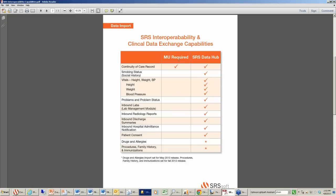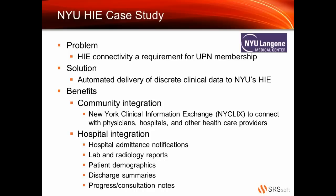On the data import side, Meaningful Use only requires that we import and display a CCD in the software. But at SRS, we import all these discrete data elements — vitals, problems, inbound labs, radiology reports, discharge summaries, hospital admittance notifications, and patient consent, all through the NYU HIE. What we don't import yet but will have by year end is drugs and allergies, procedures, family history, and immunization. None of these are required by Meaningful Use, but we do it because it's important to the productivity of a practice — not just to display the data, but to put it in the chart to save time for medical staff.